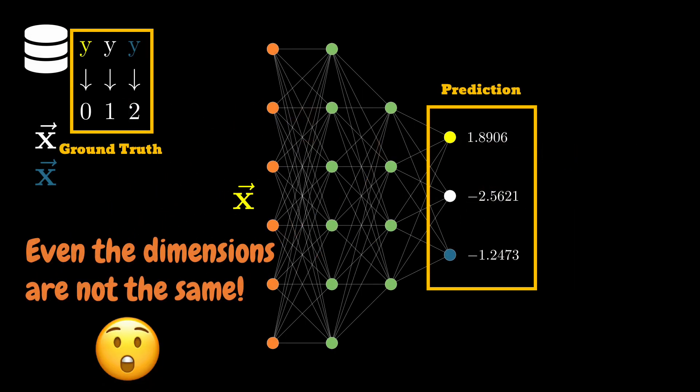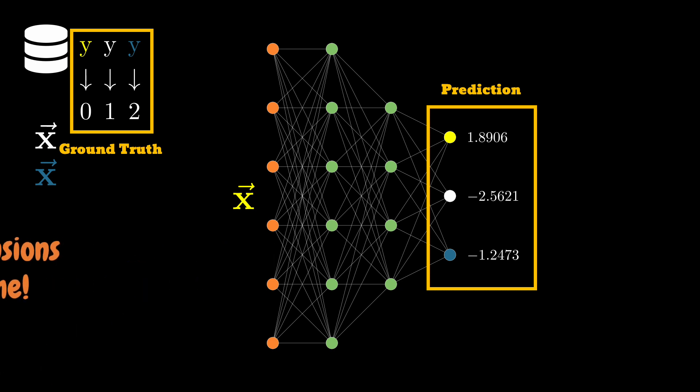As such, before figuring out a way to compare, we notice that even the dimensions of our ground truth and the prediction are not same. We get a vector of size three as the prediction, whereas the ground truth is a scalar value. So as per the traditional data science, one trick we could do is that we could see our ground truth values as categorical variables and give them what is called a dummy encoding, something like this.